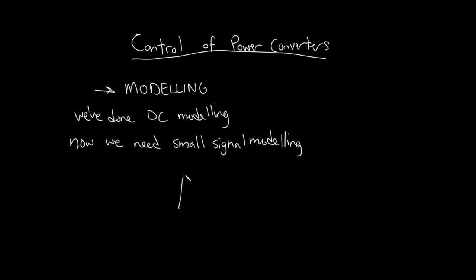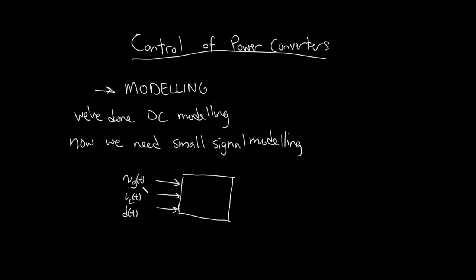If we think about our converter as a box, we have a few different inputs and outputs. One of them is the input voltage VG, another is the output current IL. We've seen load-dependent converters and we know that non-ideal converters — even DC hard-switch converters — are still dependent on load current. And the duty ratio is also kind of an input. The output is typically the output voltage, and we want to model how variations in input voltage, output current, and duty ratio each affect the output voltage.